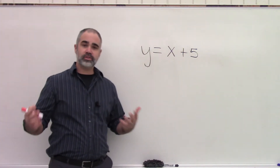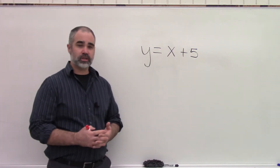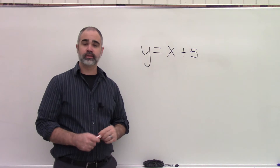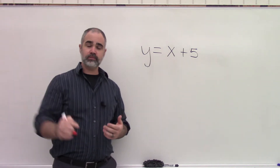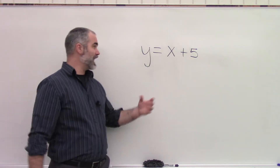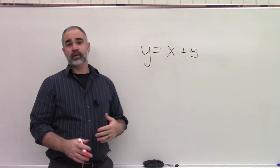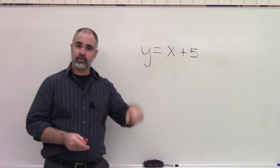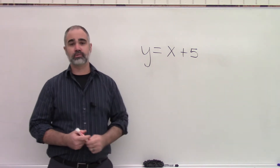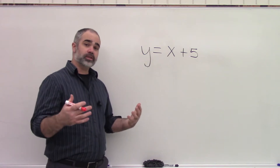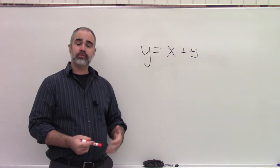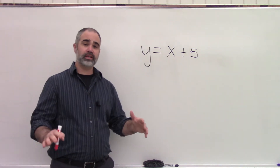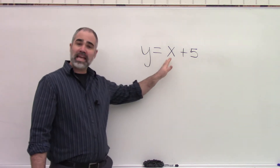Just like the vending machine, our equation has an input and output. The thing that you type into your vending machine — that's the X, it's the input. The vending machine has a ton of different choices, all the different numbers and letters you can press. With a function, all the numbers that you can put in for X — all the possibilities — it's called the domain.